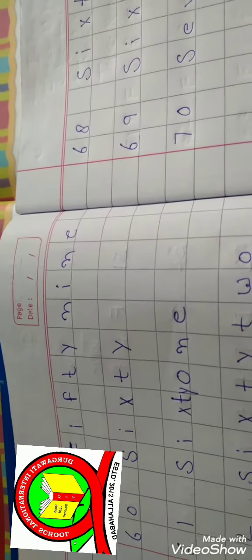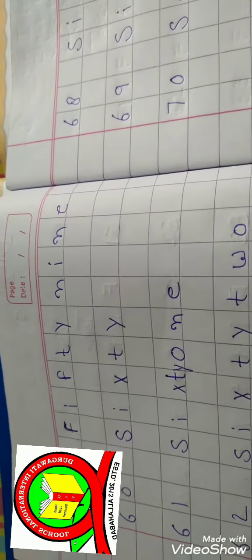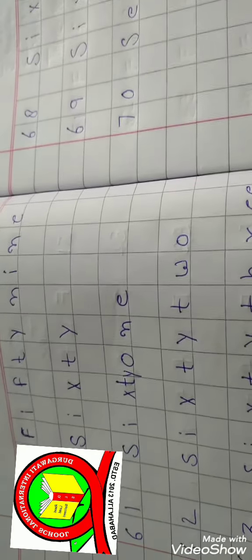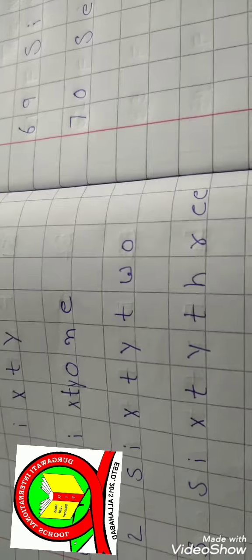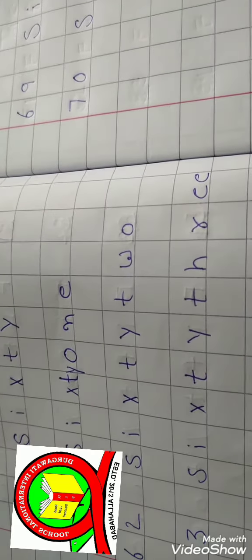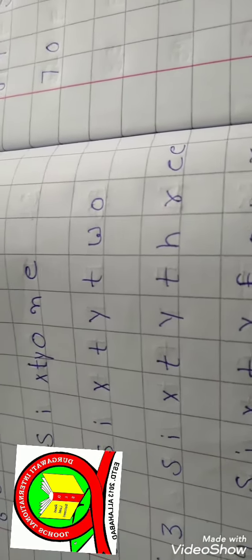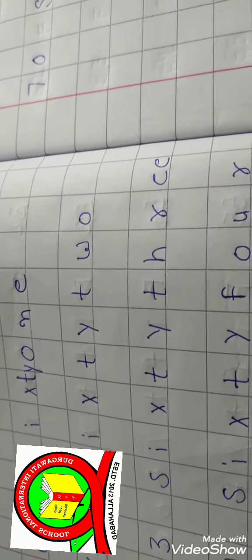F I F T Y N I N E, 59. S I X T Y, 60. S I X T Y O N E, 61. S I X T Y T W O, 62. S I X T Y T H R E E, 63.